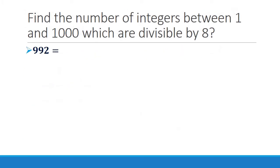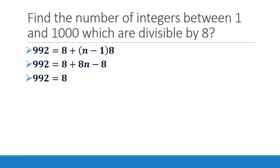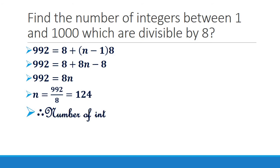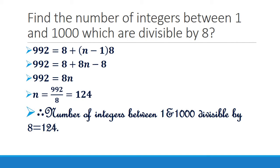We have 992 equal to 8 plus (N minus 1) into 8. By expanding, we get 992 equal to 8 plus 8N minus 8. Cancelling 8 on the right side, we get 992 equal to 8N, so N equals 992 divided by 8, which equals 124. Therefore, the number of integers between 1 and 1000 which are divisible by 8 is 124.